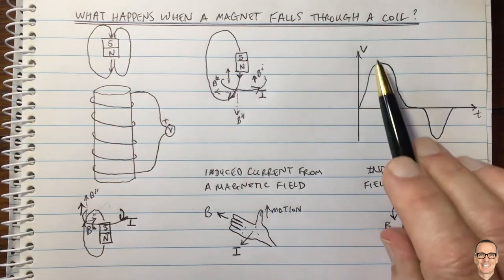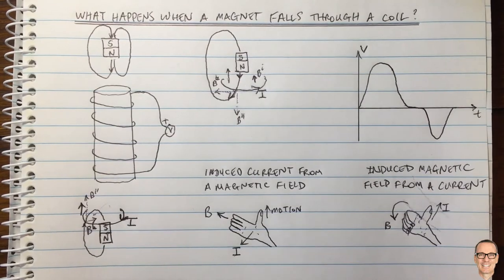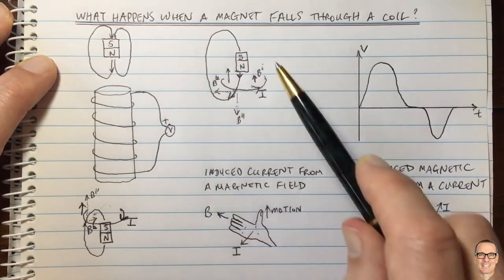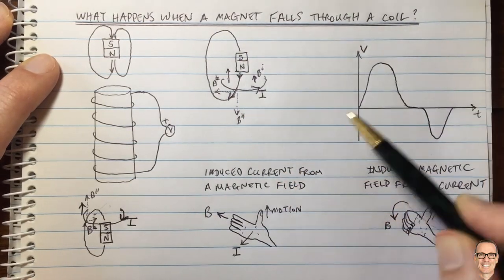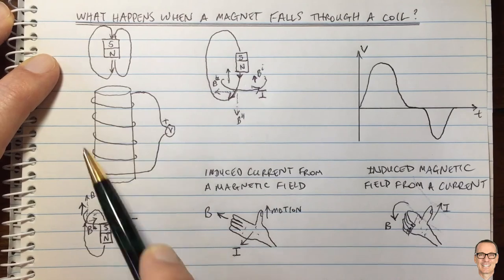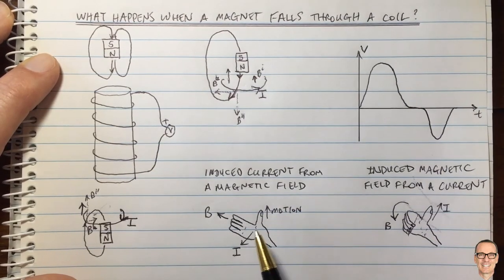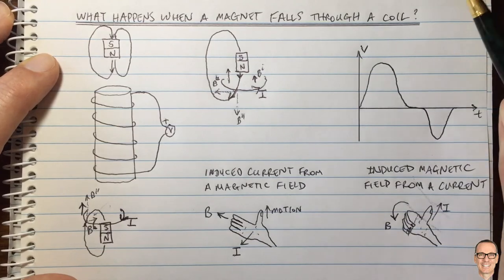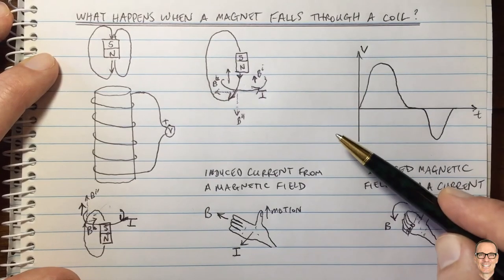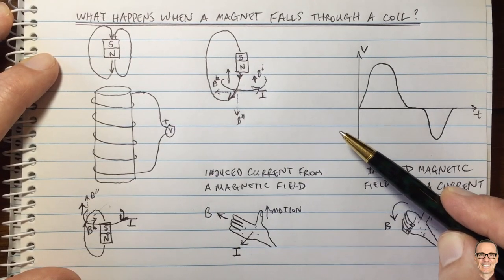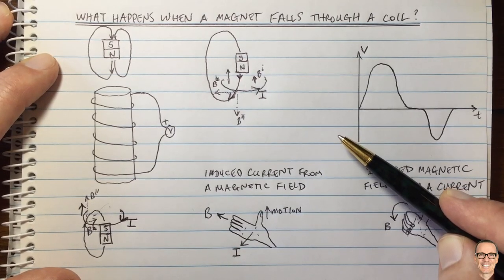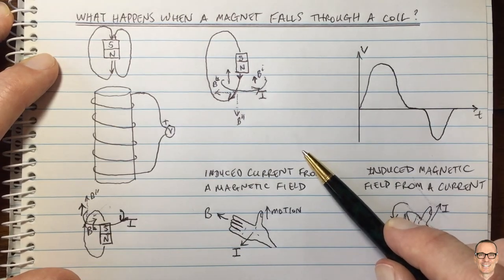So we get this characteristic shape for the voltage as a function of time. Using these right-hand rules gives you more insight into what happens when a magnet falls through a coil — more insight than simply applying Lenz's law, which doesn't tell you about the direction of current and voltage induced. You get that from fundamentally using the right-hand rules of electromagnetism. If this video has helped you, give it a thumbs up, tell your friends, check out the description below for a fully categorized listing of all channel videos, and subscribe for more.